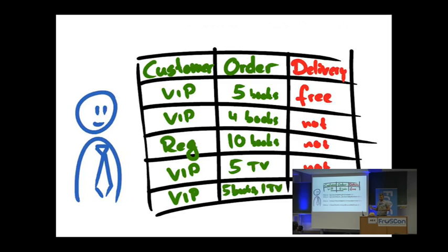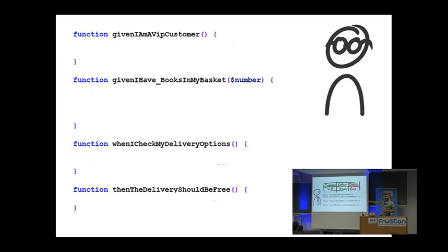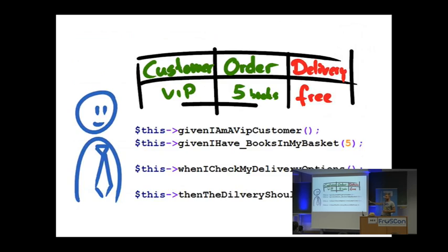You just write given/when/then helper methods — they're totally fine. You write: 'given I am a VIP customer, and given I have five books in my basket, when I check my delivery options, then the delivery should be free.' This is PHP so we can't have infix notation, but it describes the scenario exactly and it's also very flexible. I've been using exactly this and showing it to the business stakeholders at ResearchGate. They were not very happy in the beginning, but after two or three weeks they actually started being able to read it. Even with the weird PHP notation, they were fine with it. And I was quite surprised, because I thought I'd never get them to read code. But they did.